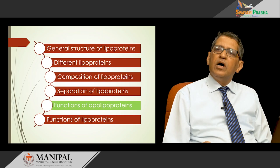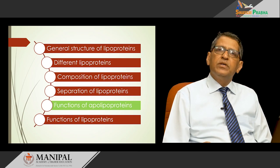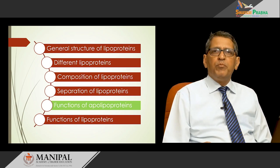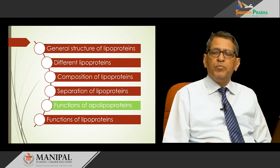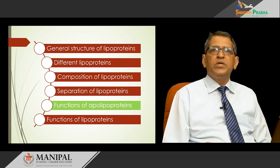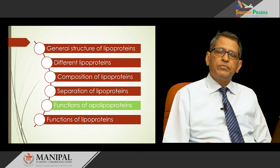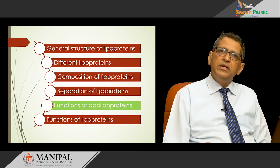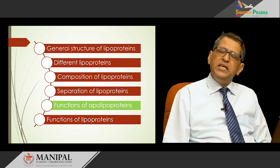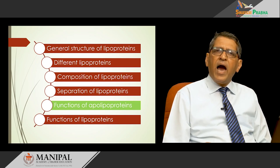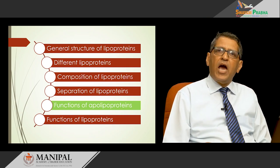Moving on to the functions of apolipoproteins: the protein portion of lipoproteins is known as apoproteins or apolipoproteins. There are two types — integral apoproteins and peripheral apoproteins. These apoproteins are initially named according to alphabets A, B, C, D, E, etc. Each apoprotein has its own function, and different lipoproteins have different apoproteins.